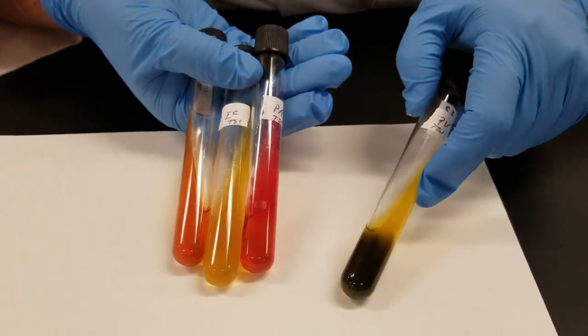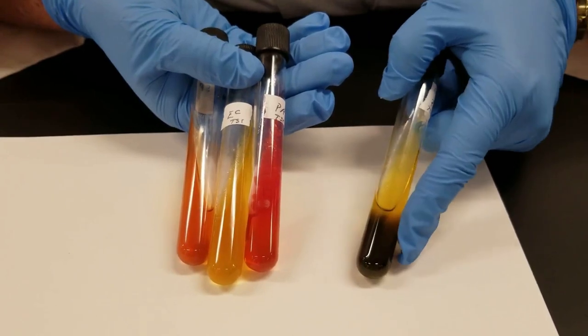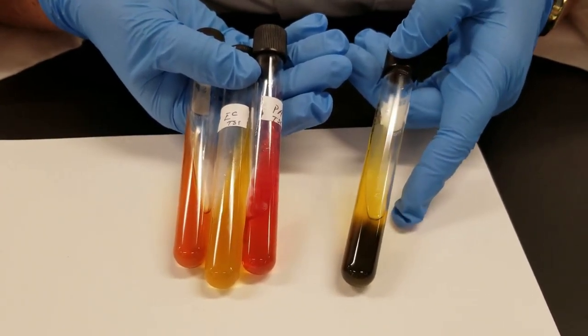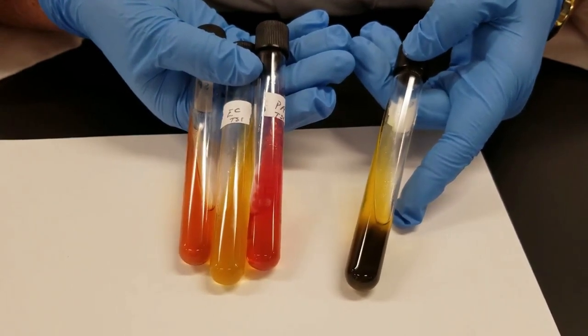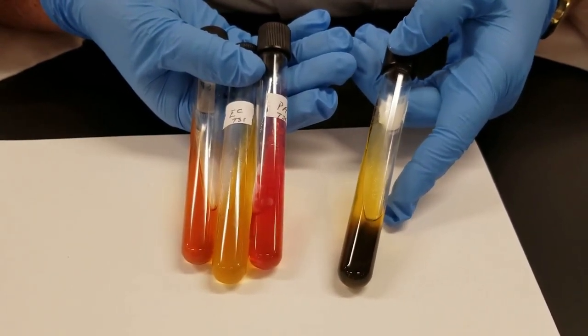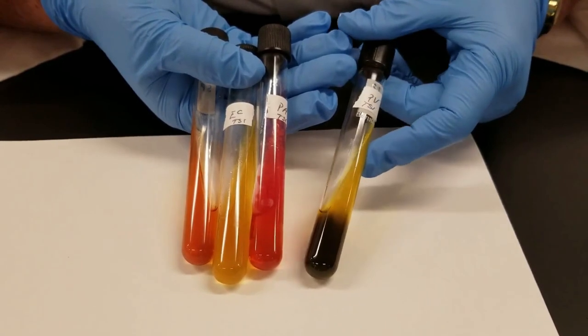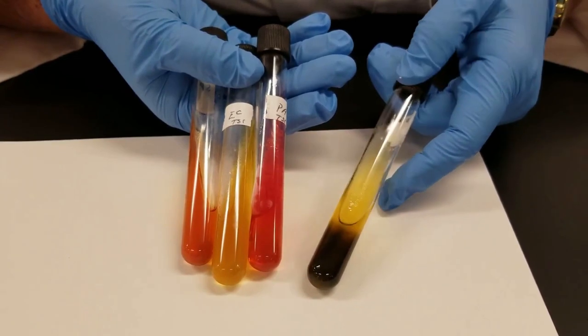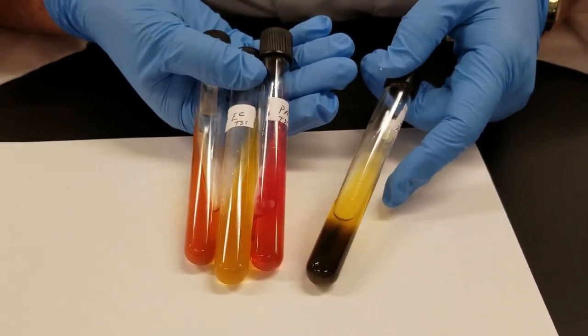As you can see here, we had acid production along the slant. You can't even see in the butt because there is so much hydrogen sulfide production, turning it black. So that would be a positive for H2S, hydrogen sulfide production. And it would be acid along the slant. And I do not, at this point, see any gas production in the tube.